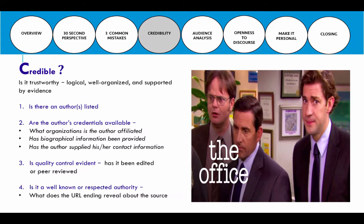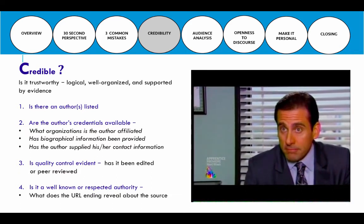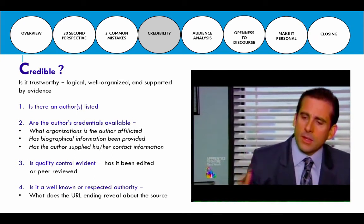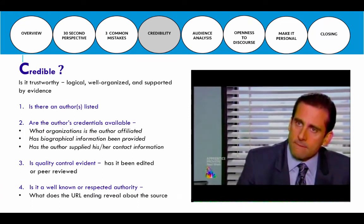This is very different from getting information from a source like Wikipedia. As a clip from The Office illustrates — 'Wikipedia is the best thing ever. Anyone in the world can write anything they want about any subject, so you know you are getting the best possible information.' That clip highlights exactly why we don't want to use Wikipedia. Anybody can access it, anybody can put information there, there is no peer review, and we don't know who those people are. It is not a credible source — avoid it at all costs.